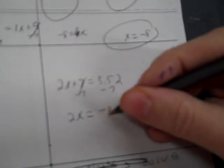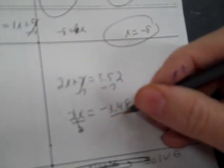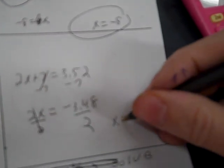So, log 48 divided by log 3. So, 3.52. So, 2x plus 7 equals 3.52. And then I need to subtract 7 and divide by 2. Negative 1.74.